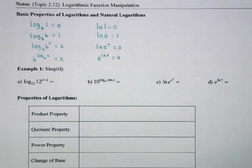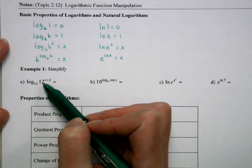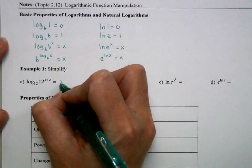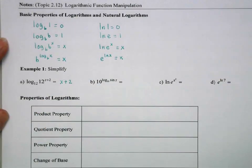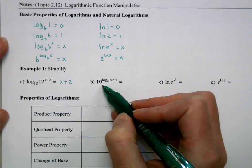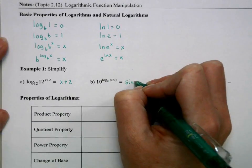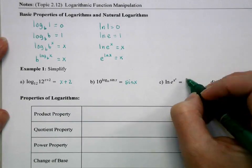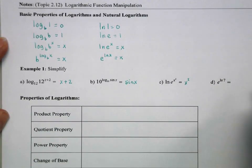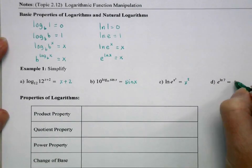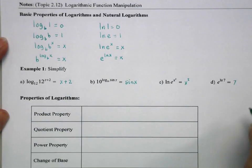So we can use those properties for some simple simplification. So log base 12 of 12 to the x plus 2 is just going to be that x plus 2. 10 raised to the log base 10 of sine of x is just sine of x. Natural log of e to the x squared is just x squared. And e to the natural log of 7 is just 7.